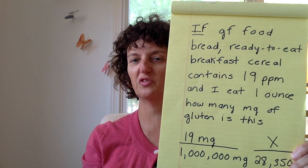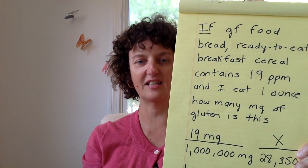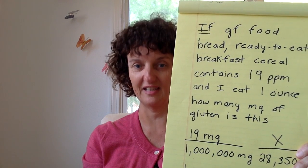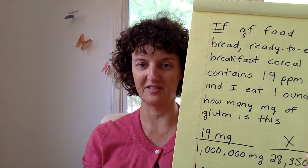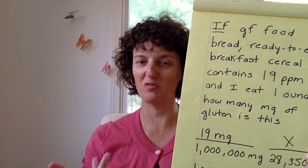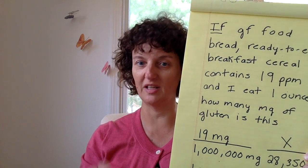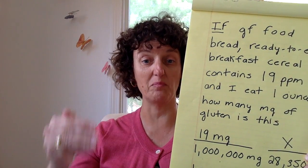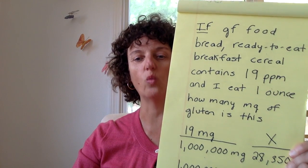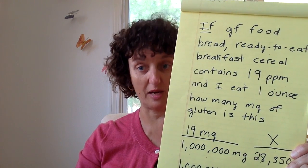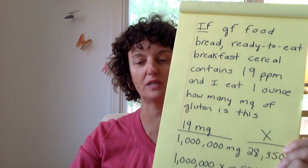So if a gluten-free food — like a bread, ready-to-eat cereal, dry hot cereal, or dry pasta — contains 19 parts per million, or any amount, you can use this same formula to take any parts per million amount of gluten and convert it into a milligram amount for the amount of food that you're eating. And if I eat one ounce of that bread product or ready-to-eat cereal, how many milligrams of gluten is this?